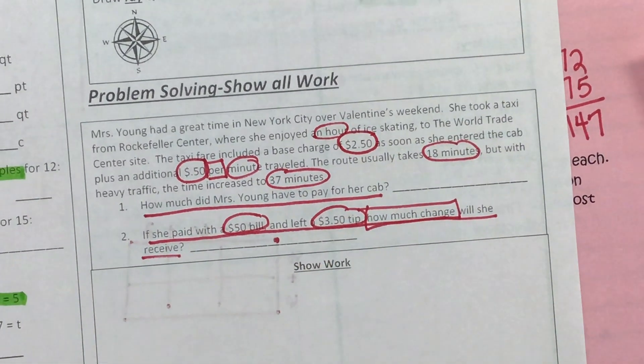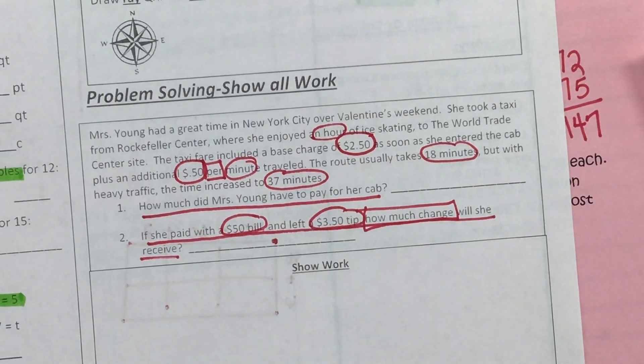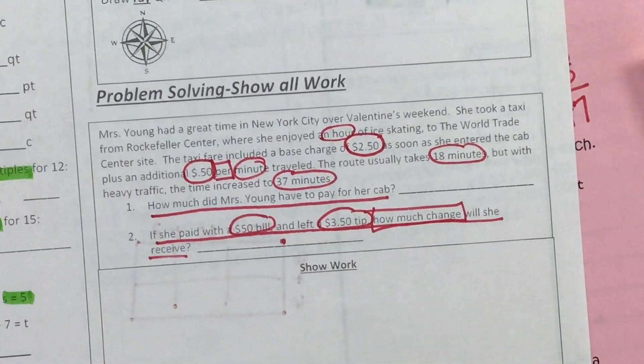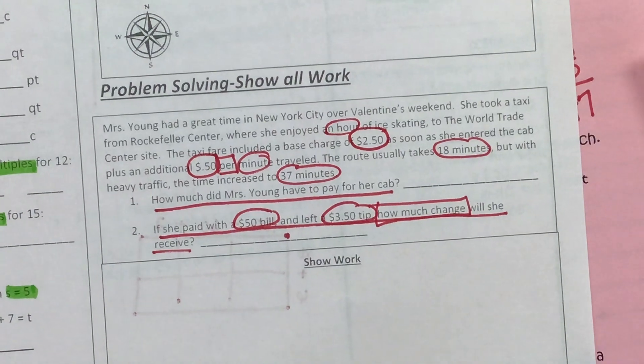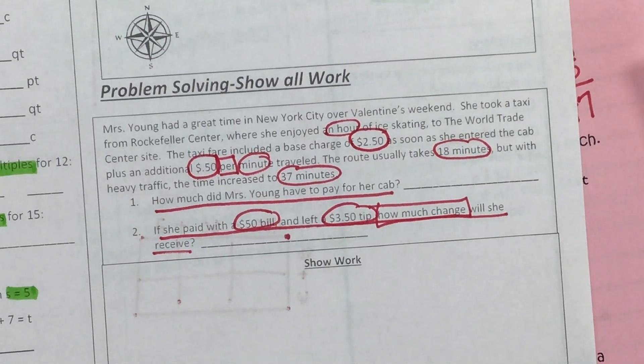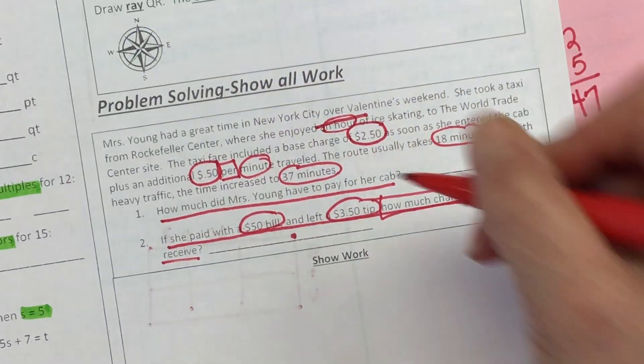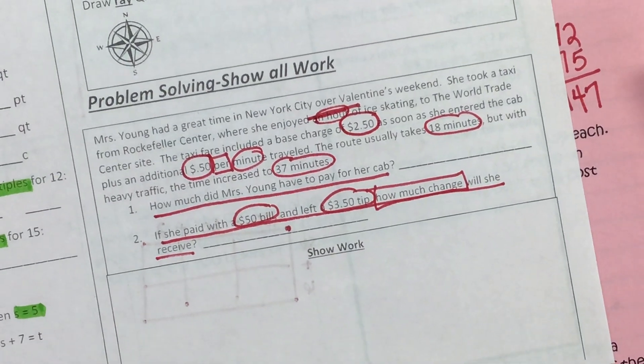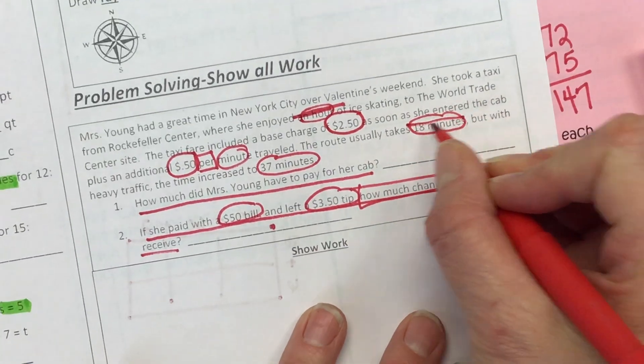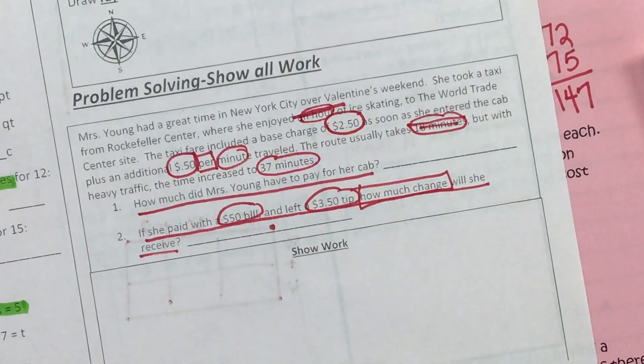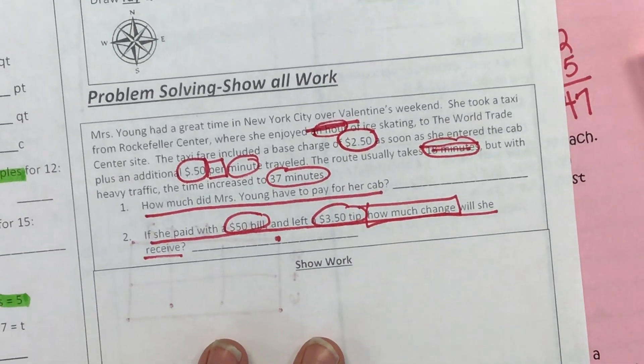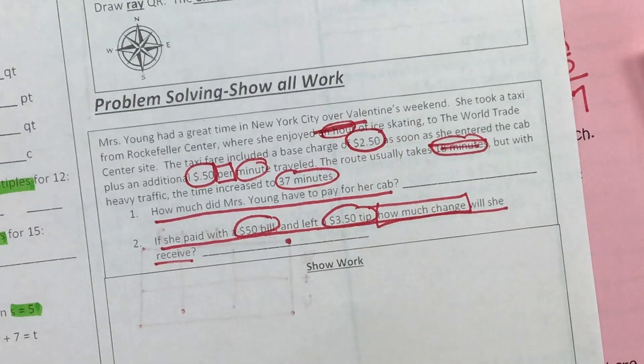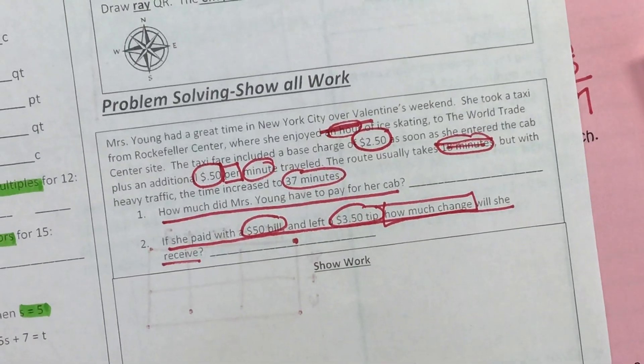What is the information that we don't need? We don't need this number. An hour is not important because we're just trying to figure out how much she paid for the cab. We don't need the 18 minutes. That's just confusing. So she pays $2.50 plus 50 cents per minute and then she's going to tip $3.50. How much does she pay for a cab and how much change does she get?